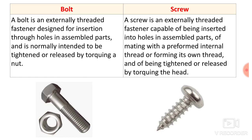The very first difference: a bolt is an externally threaded fastener designed for insertion through holes in assembled parts, and is normally intended to be tightened or released by torquing a nut. Basically, a bolt is a fastener used for fastening things, and it is used with a nut — clamped by giving torque to the nut or to the bolt.